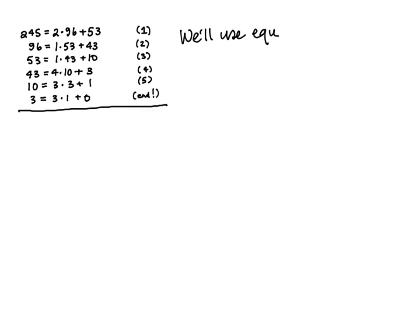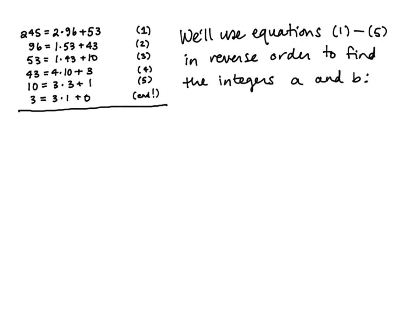What we are going to do on this slide is figure out how to use equations 5 through 1 in order to work our way back up to 1 as a combination of 245 and 96. Here's an overview: we take the equation before we got to our zero remainder — in this case equation 5 — and solve it for 1, giving us 1 written in terms of 10 and 3. Then we use equation 4 to replace 3 as a combination of 43 and 10, equation 3 to write 10 as a combination of 53 and 43, equation 2 to write 43 as a combination of 96 and 53, and finally equation 1 to rewrite 53 as a combination of 245 and 96. At the end we have 1 as a multiple of 96 plus a multiple of 245.